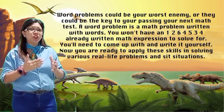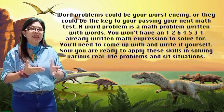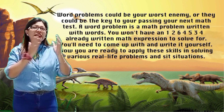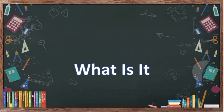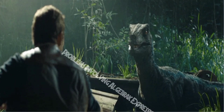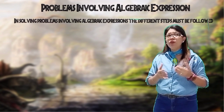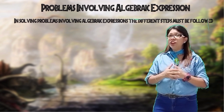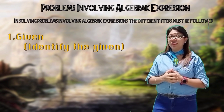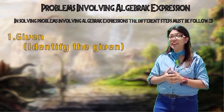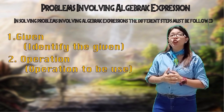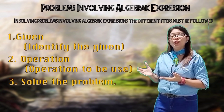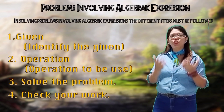A word problem is a math problem written in words. You need to come up with and write the expression yourself. You're ready to apply the skills in solving various real-life problems involving algebraic expressions. In solving problems involving algebraic expressions, the different steps must be followed: Number 1, identify the given data. Number 2, determine the operation to be used. Number 3, solve the problem and show your solution. Number 4, always check your work.